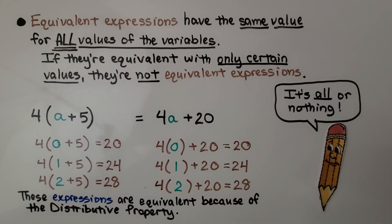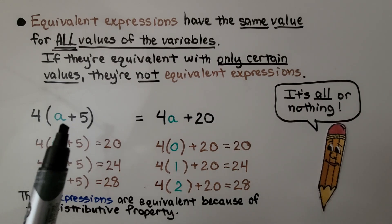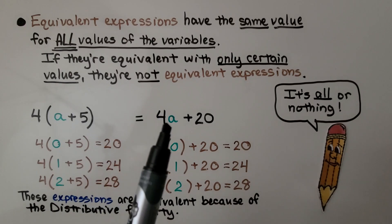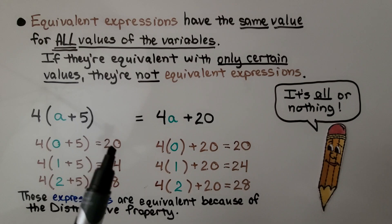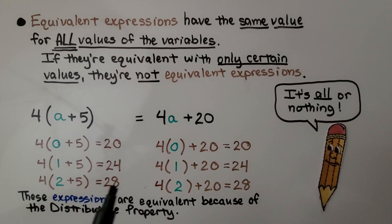Here we have 4 times (a plus 5) and it equals 4a plus 20. If a is 0, they both equal 20. If a is 1, they both equal 24. If a is 2, they both equal 28. And we could keep going. These expressions are equivalent because of the distributive property.